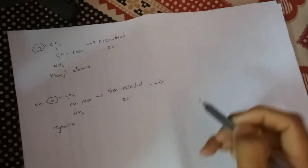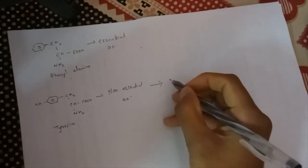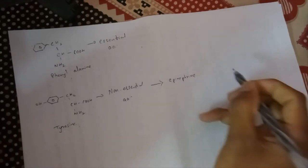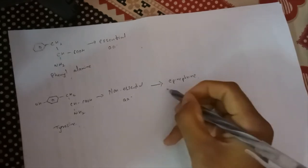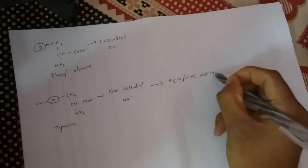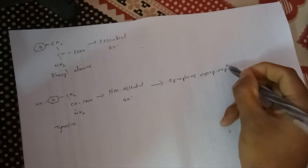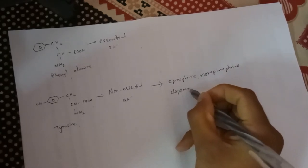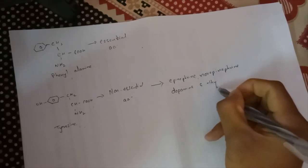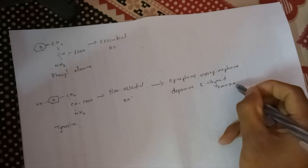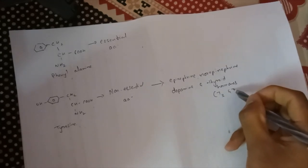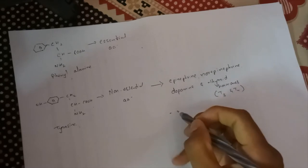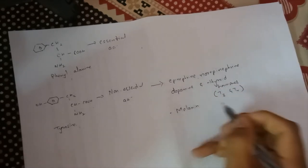Moving on: tyrosine is responsible for synthesizing different hormones and compounds such as epinephrine, norepinephrine, dopamine, and thyroid hormones — that is T3 and T4. It is also responsible for synthesizing the colored pigment in human beings, which is melanin.